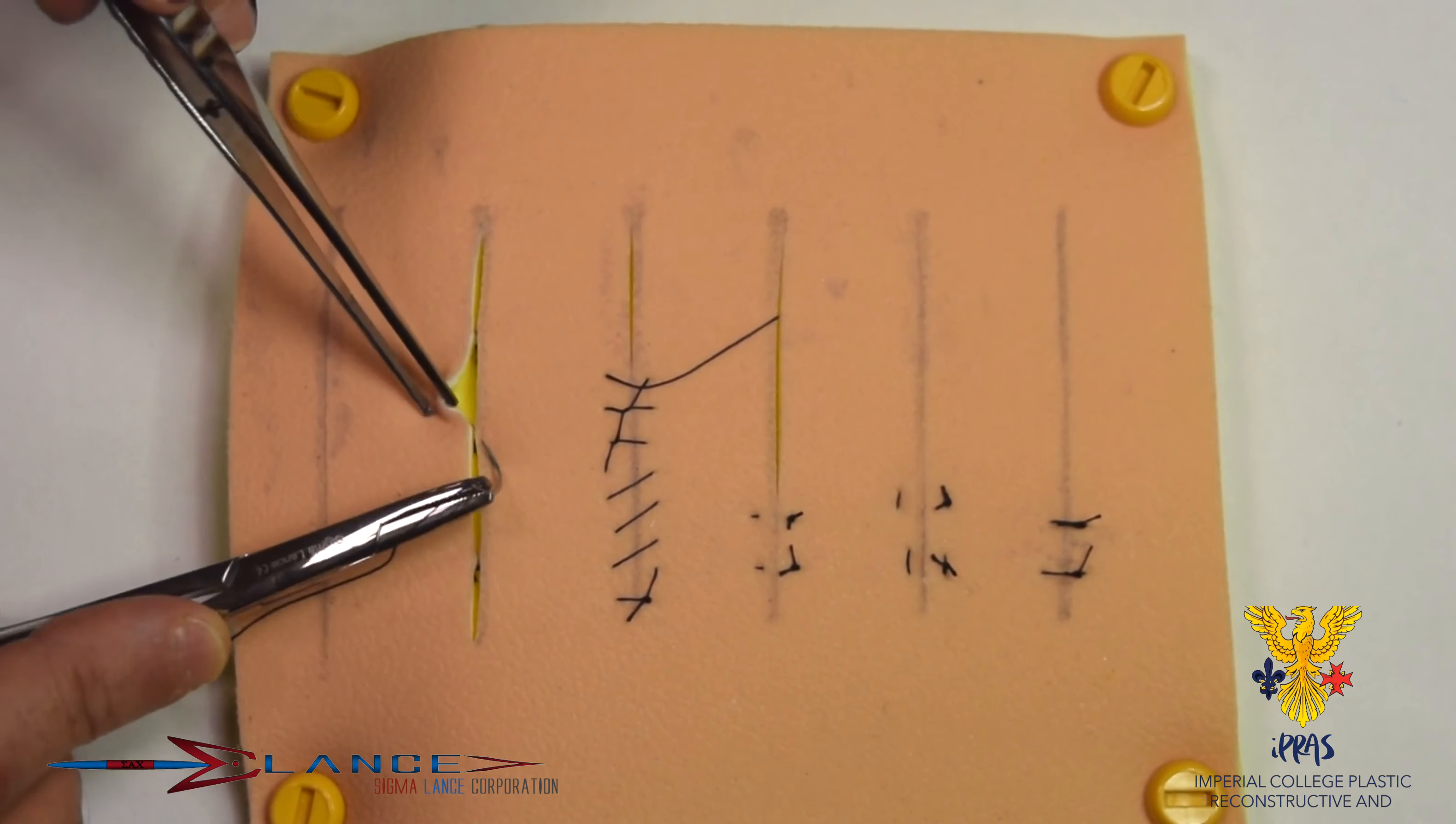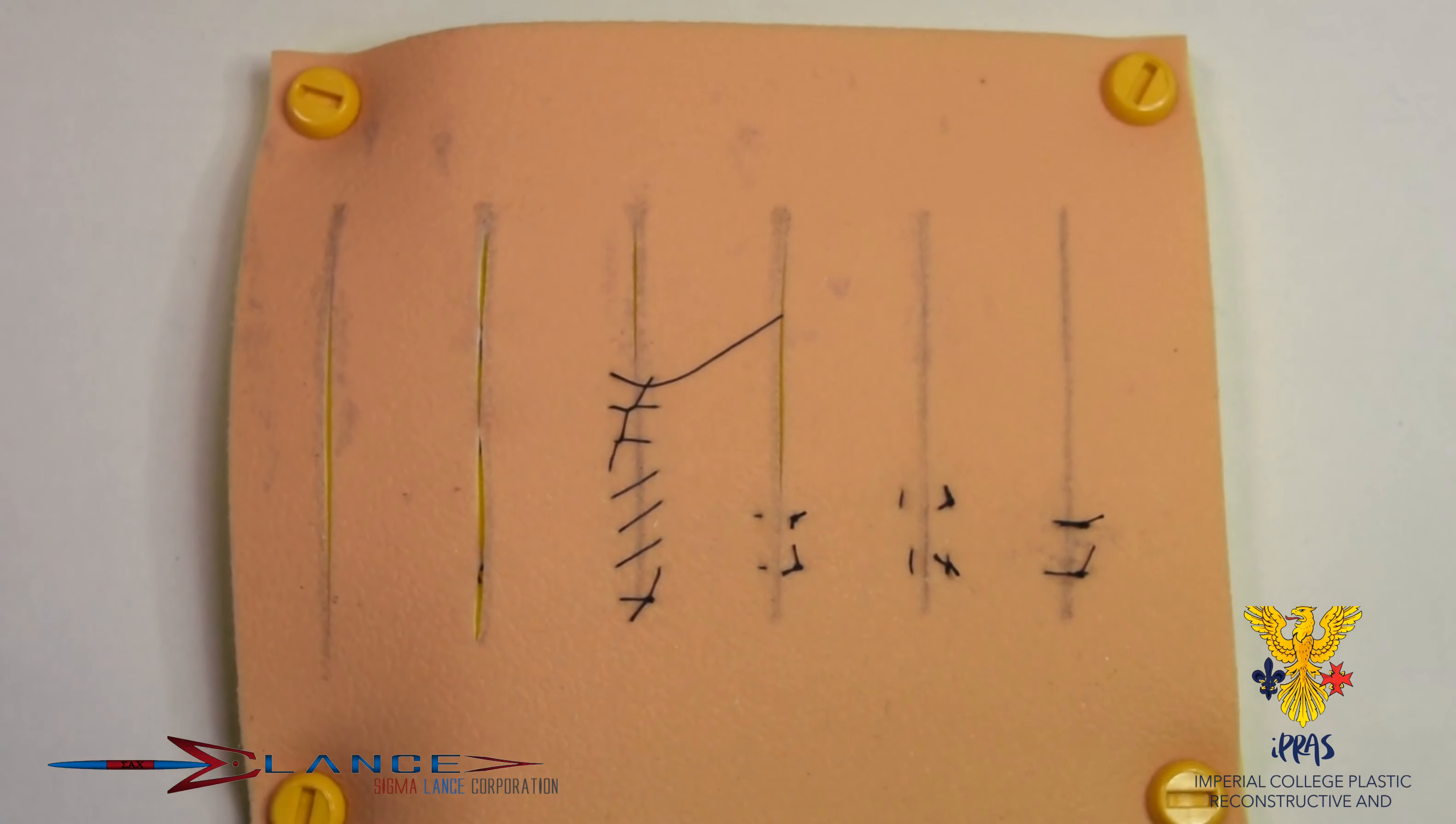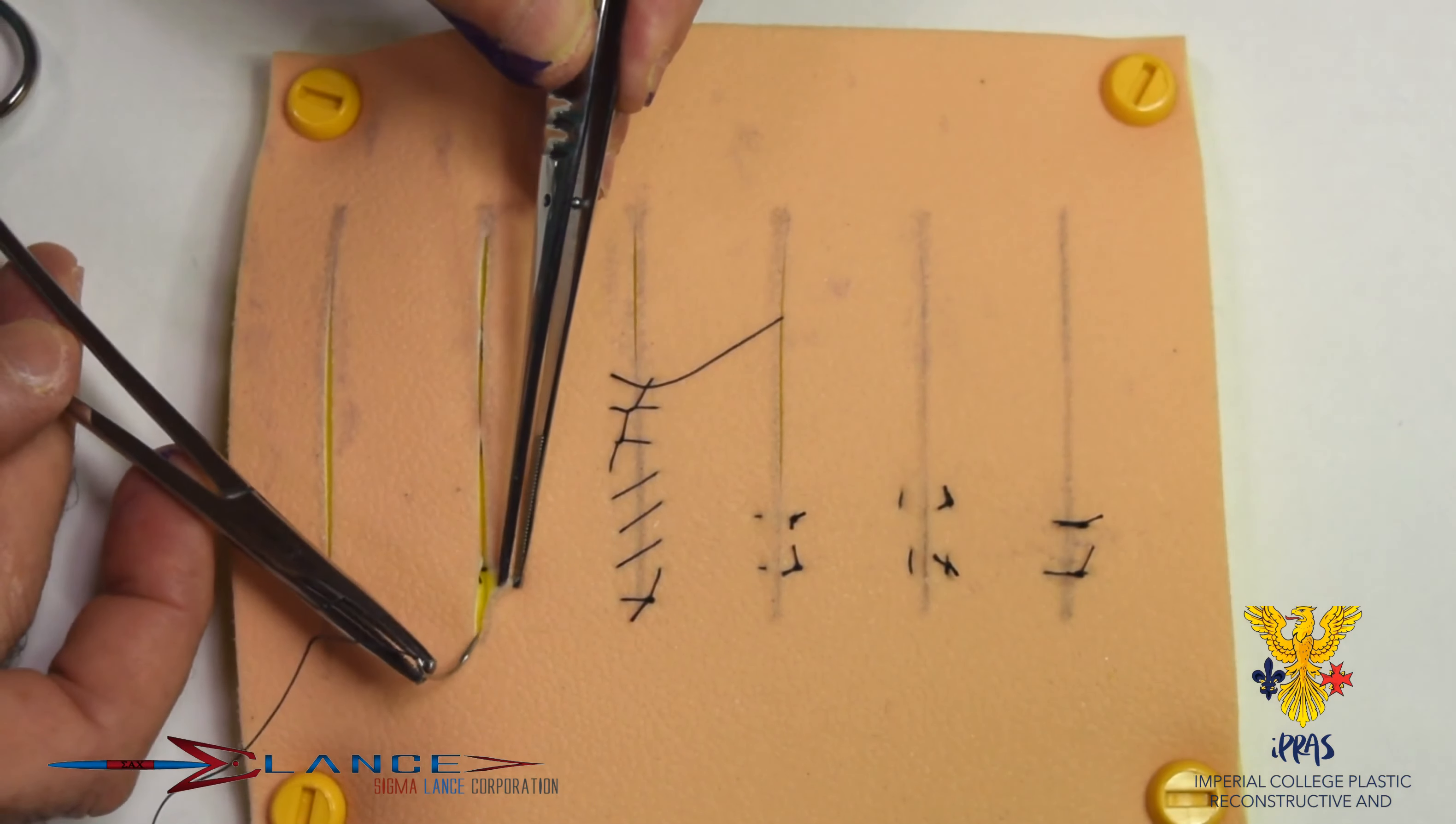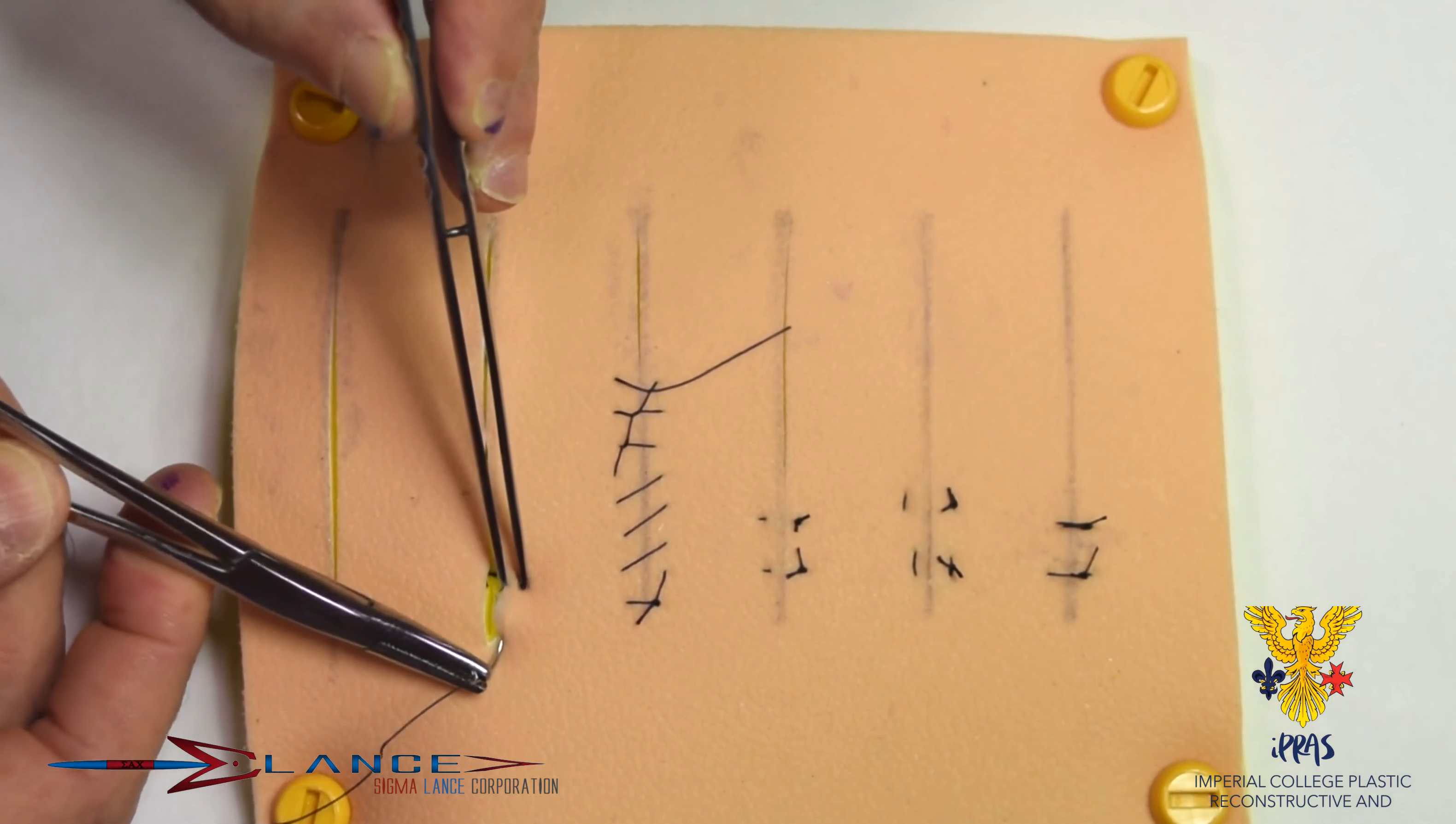I've put interrupted deep sutures in that's brought the dermis together, and so this skin closure now is no longer under any tension. And the subcuticular runs just below into the dermis and begins initially with a securing stitch.